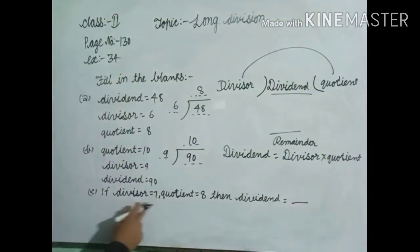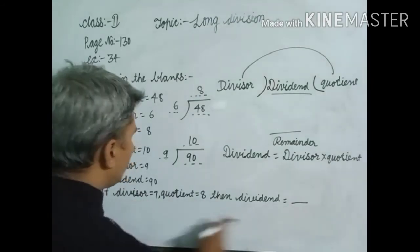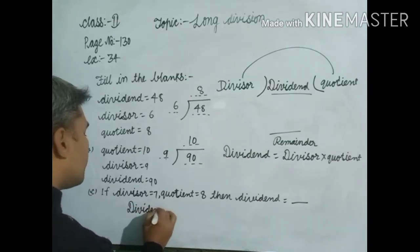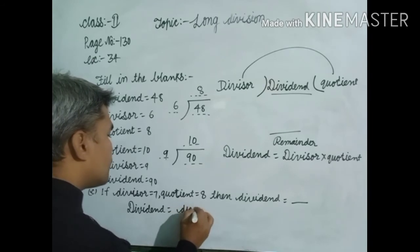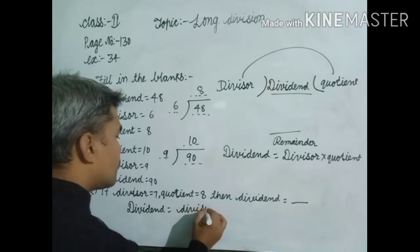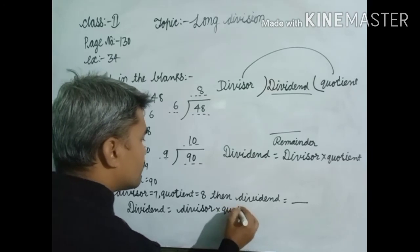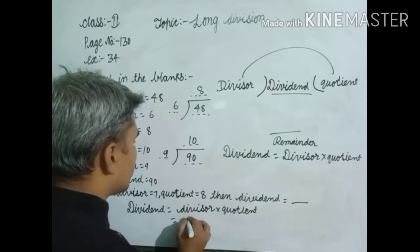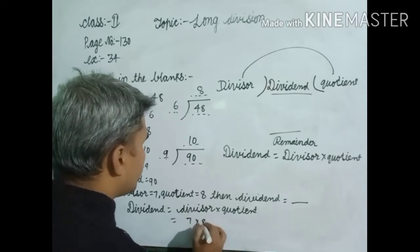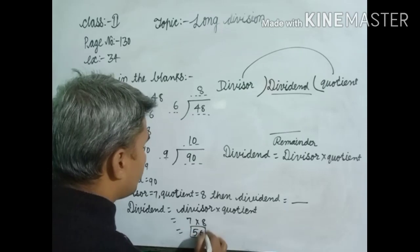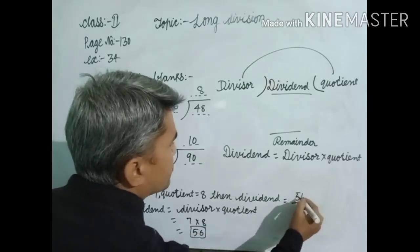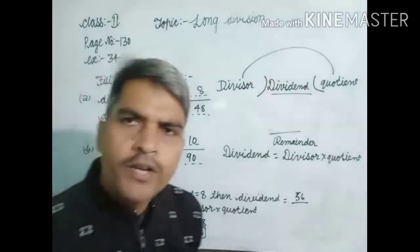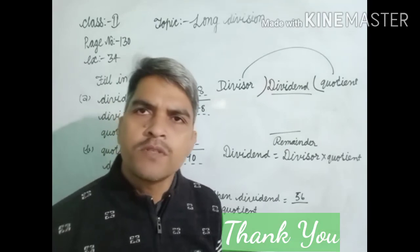So in question C: if the divisor is 7 and quotient is 8, the dividend is equal to what? So you must write it here. Quotient is 6, so dividend is equal to 56. Quotient is equal to 8, so dividend is equal to 56. That is the answer to this question. In this way you may complete page number 130. If you have any problem, ask them. Thank you, students.